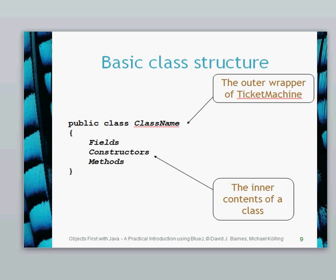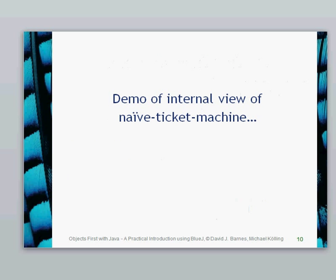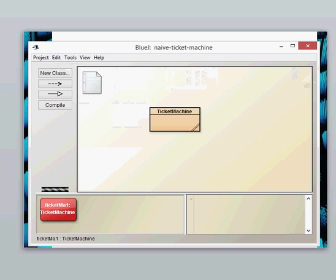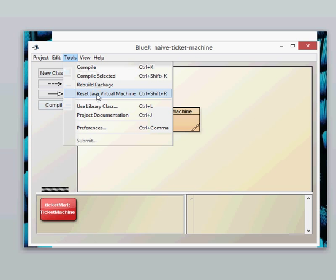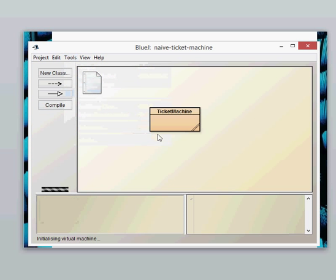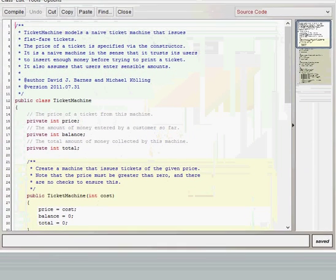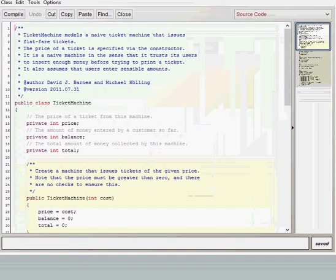That's the basic view of how the class looks. You can ignore the public part of the access modifier, we're going to cover that in later slides. Let's have a look at the internal view of the naive ticket machine. Here's our ticket machine. I'm just going to reset the Java virtual machine and dive into the ticket machine.